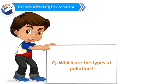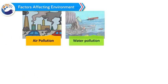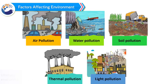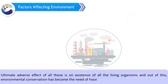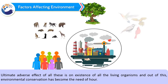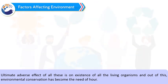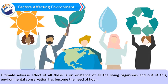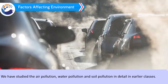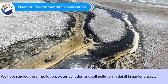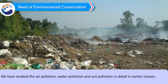Which are the types of pollution? Air, water, soil, thermal, and light pollution are the types of pollution that occur around us. The ultimate adverse effect of all these is on the existence of all living organisms, and environmental conservation has become the need of the hour. We have studied air pollution, water pollution, and soil pollution in detail in earlier classes.